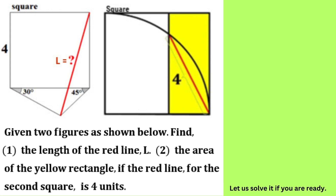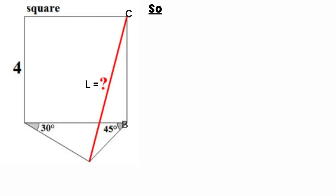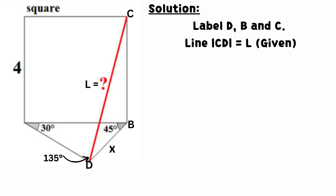We are required to find the length L and the area of the yellow region. Label D, B, and C. Line CD equals L — it is given.